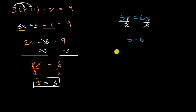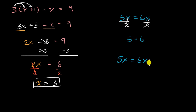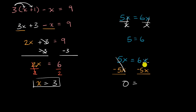Let me rewrite it. Five x is equal to six x. Even though it looks a lot like the last step in the first equation and you're tempted to divide, you have to realize that there are x terms on both sides — so let me combine them. I could subtract five x from both sides. Five x minus five x is zero, and six x minus five x is x. So the solution to five x equals six x is indeed x equals zero.